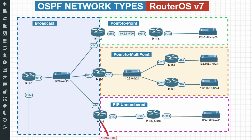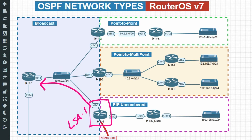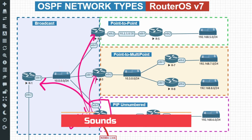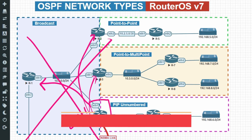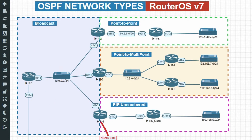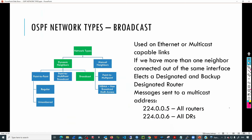In a previous video, we talked about link state advertisements and the different types of messages devices send to exchange routing information. Every router is going to create an LSA Type 1 that includes information about all connected networks — the local OSPF data — and that information is exchanged with neighbors. If R4 sends that information to R1, then to R3, and to R2, that generates a lot of traffic. If we have 10 routers, every router would be sending LSA Type 1 to all remaining routers, which is completely inefficient. To avoid that, OSPF uses the concept of a designated router and backup designated router.